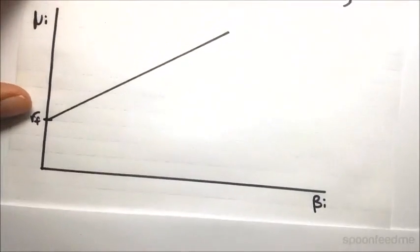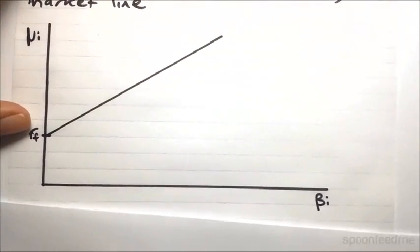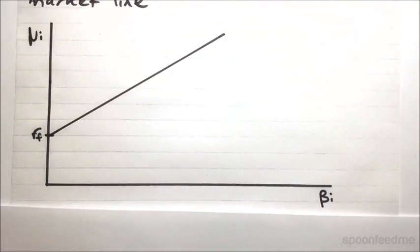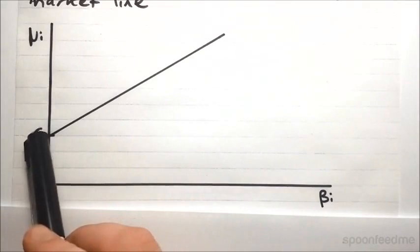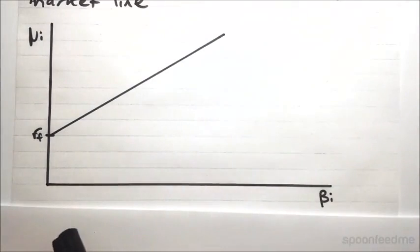So we had a look at the capital market line, and the security market line we see here is fairly similar. You can see it starts off at this intercept that's at the risk-free rate, and then it just extends out.